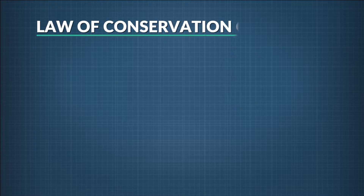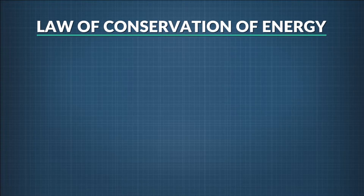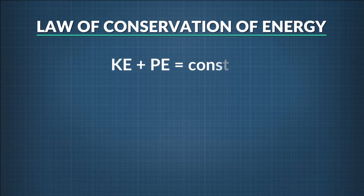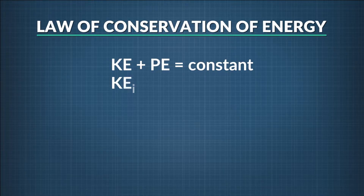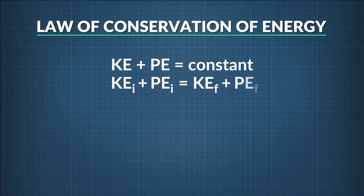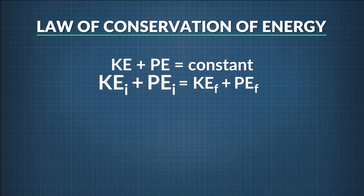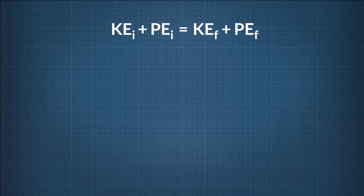We've been saying that energy is conserved, but what does that really mean when it comes to solving equations? It means that the number we get when we add up an object's kinetic energy plus potential energy is always the same. As an equation, we write that the initial kinetic energy plus the initial potential energy is equal to the final kinetic energy plus the final potential energy. This is just like saying that the initial energy is the same as the final energy — energy is conserved.